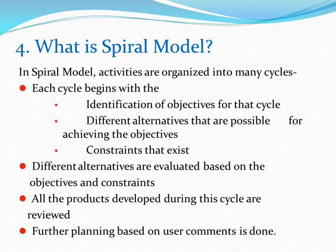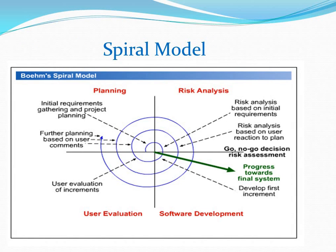What is Spiral Model? In Spiral Model, activities are organized into many cycles. Each cycle begins with identification of objectives for that cycle, different alternatives possible for achieving the objectives, and constraints that exist. Different alternatives are evaluated based on objectives and constraints. All products developed during this cycle are reviewed, and further planning based on user comments is done. The four phases are: planning, risk analysis, software development, and user evaluation.